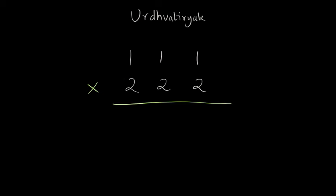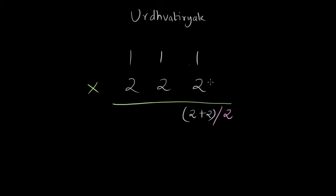Let's first take the multiplication of the rightmost digits. We multiply two times one, which is Urdhva, and write the result on the right with a slash. Then we go for the cross multiplication and multiply two and one, and two and one, which gives us two plus two.